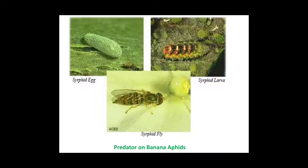This is the predator on banana aphids. We can use this predator — the syrphid fly — for the management of banana aphids. In this image, we can see the egg, larva, and adult fly of the syrphid. Thank you.